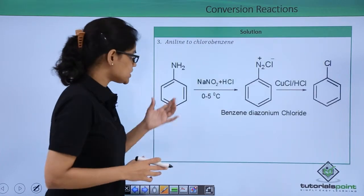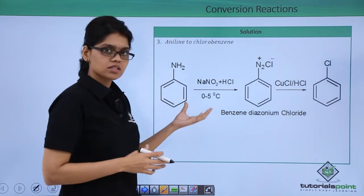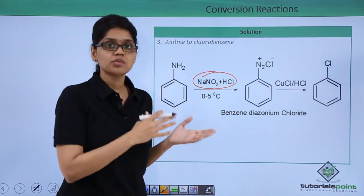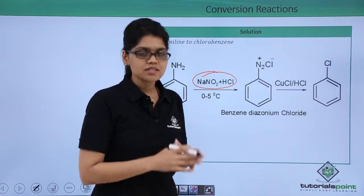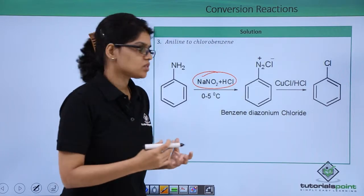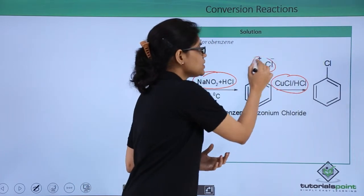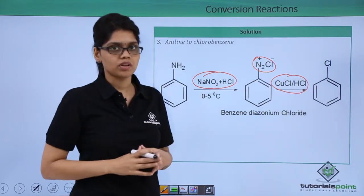Let's look at how to achieve this conversion. Aniline is treated with NaNO2 and HCl at a temperature of 0 to 5 degrees so that benzene diazonium chloride is obtained. Now this diazonium salt can be easily substituted using CuCl and HCl where N2+ will get substituted by Cl, giving us chlorobenzene as the final product.